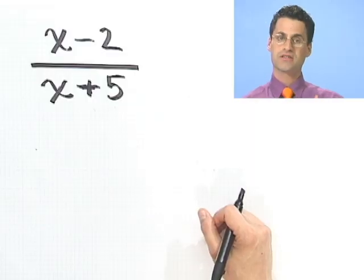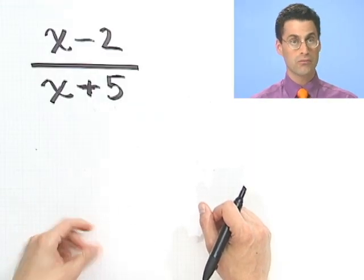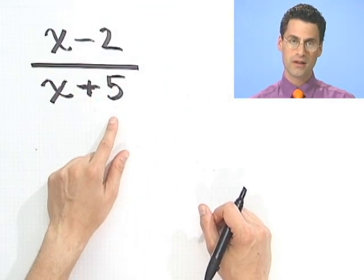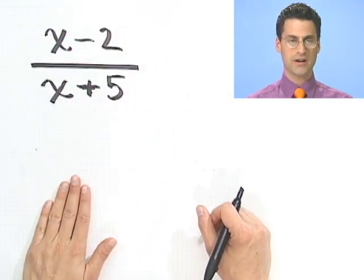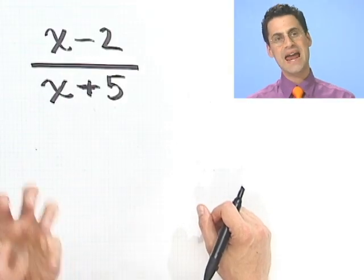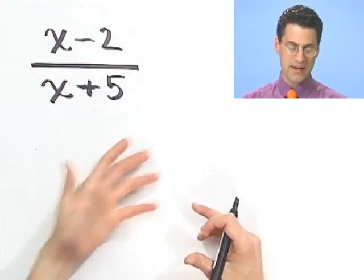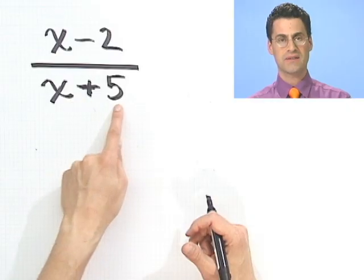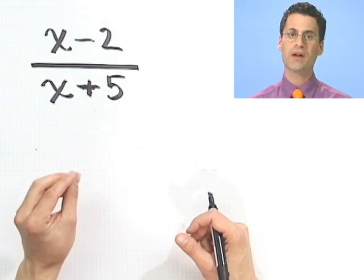But once you start having rational expressions, there could be little complications. What could a complication be? Well, any time the denominator is zero. So, in fact, when we think about a thing like this, a rational expression, we sometimes think about the domain. The domain of a function or the domain of an expression of this sort are just all the allowable x's. That is, all the x's that you can plug in and it would produce a real good old-fashioned number. And you'll notice here that this is an example where there is an x value that would make this thing go sour because I can't have a zero in the denominator.